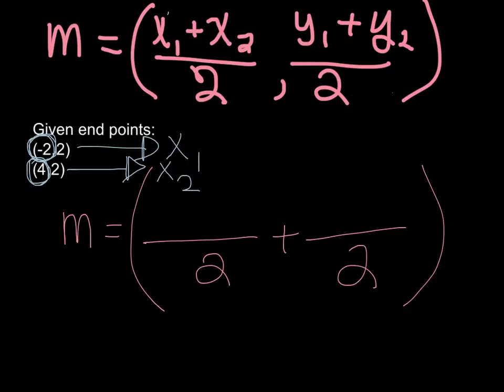So as you can see, I've circled the two x points that we're given, and I've labeled them x1 and x2. Now we're going to plug them into our equation. So we'll start with x1. x1 has been given to us as negative 2 plus x2, which is a positive 4.